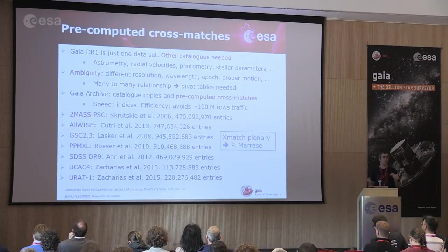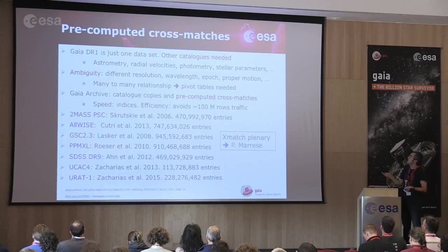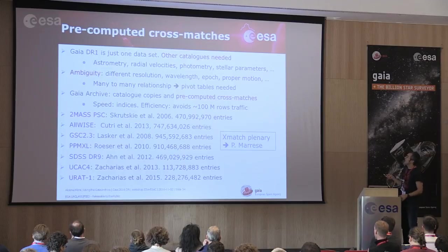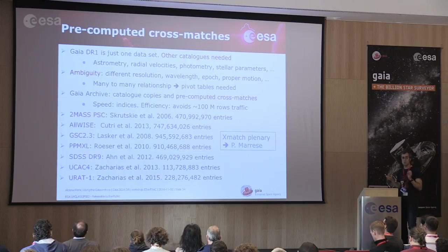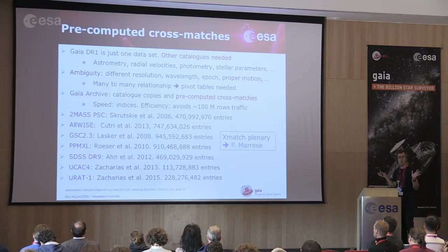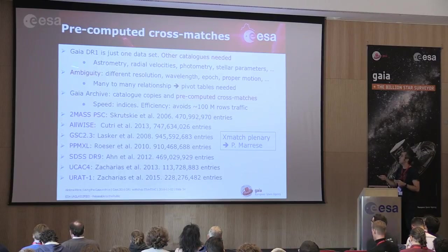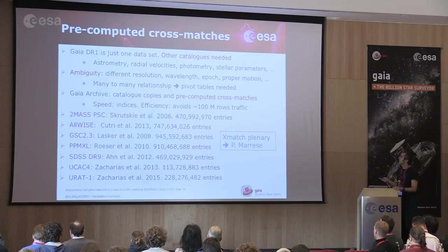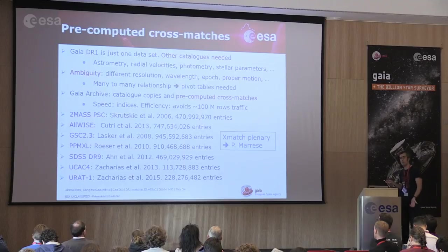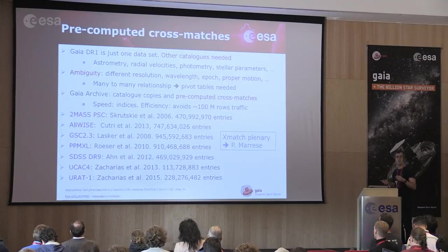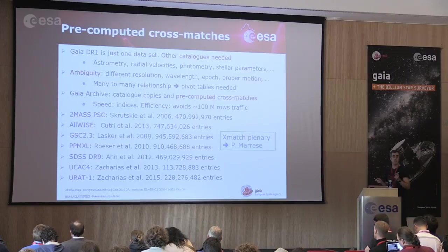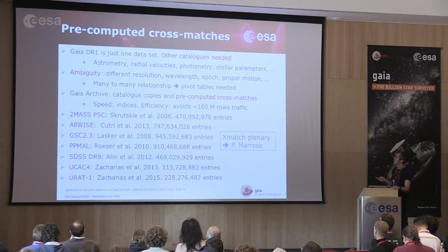Pre-computed cross-matches: why are they important? Because Gaia is just one dataset — we need other data to do science. The key point is that cross-matching is ambiguous. You can construct a big table with 2MASS, WISE, or other counterparts, but maybe a counterpart doesn't exist or you can't be sure which it corresponds to. We need to deal with ambiguity by constructing a pivot table between our catalog and an external catalog. Having them pre-computed avoids lots of traffic: you don't need to upload too much to the archive because it's already there.